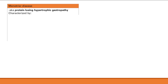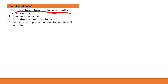Now we're going to switch to another disease of the stomach: Ménétrier disease, also known as protein-losing hypertrophic gastropathy. The name tells you everything — it's a protein-losing state because you have too much mucus production. There's lots of protein in the mucus, so you're producing and expelling all this mucus and losing protein. You have these hypertrophied mucosal folds, and impaired acid production due to atrophy of the parietal cells, which normally secrete HCl.